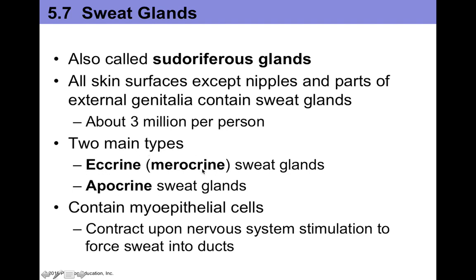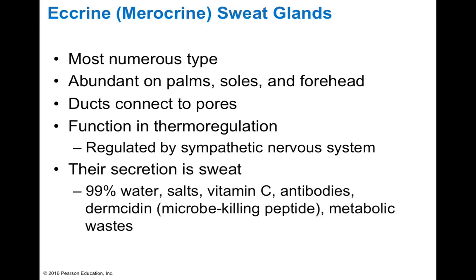We have the eccrine or merocrine sweat glands, named because they use a merocrine form of secretion, and then apocrine sweat glands are another variety. These contain myoepithelial cells which contract on nervous system stimulation to force sweat into the ducts and onto the skin surface. The merocrine sweat glands, also called eccrine, are the most numerous.